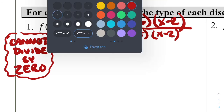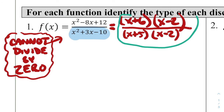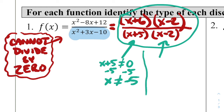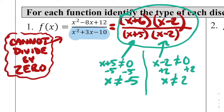How do we determine from factored form which type it is? Looking at the denominator factors: x + 5 cannot equal 0, so x cannot equal −5; and x − 2 cannot equal 0, so x cannot equal 2. Those are the two points of discontinuity. Now we need to categorize them.